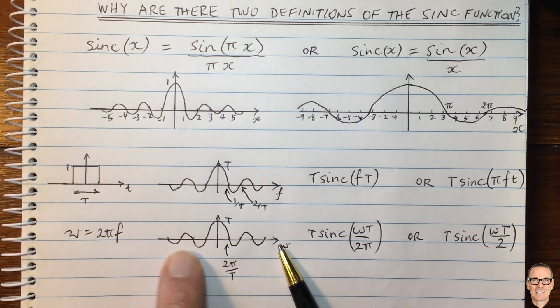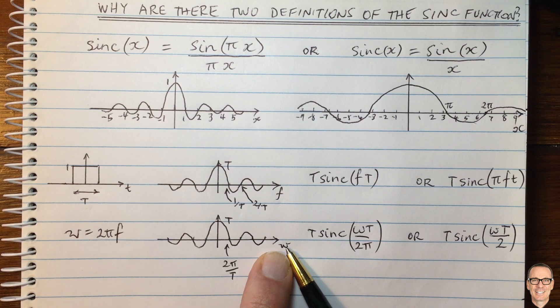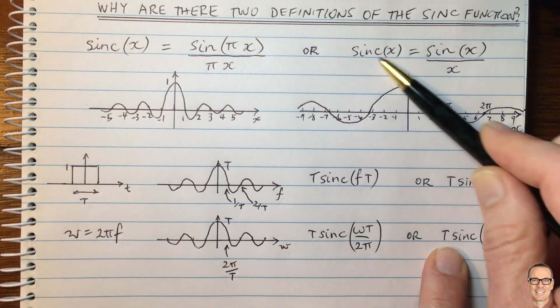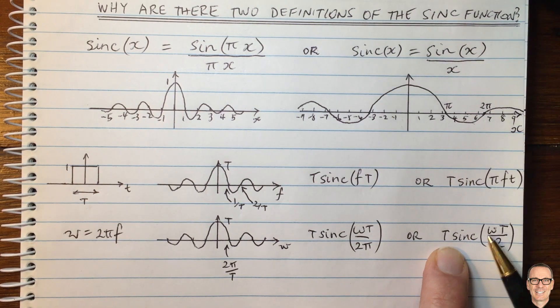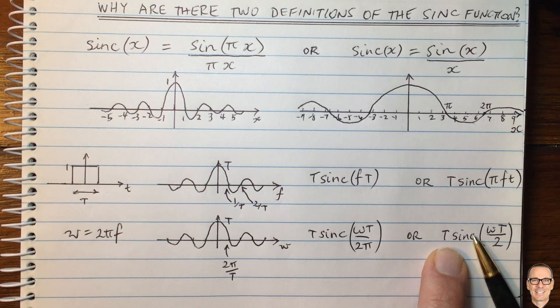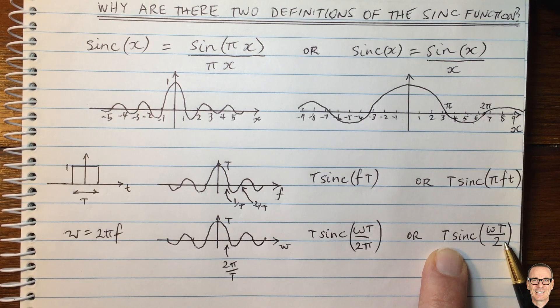If you were more interested in thinking about frequency in terms of radians, then you may prefer the right-hand definition of sinc, because again, when you're writing it down here, you don't have the pi appearing, and you can see the relationship between the radial frequency and capital T directly.